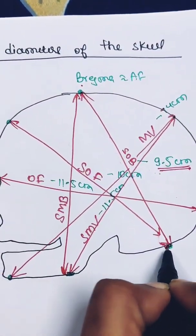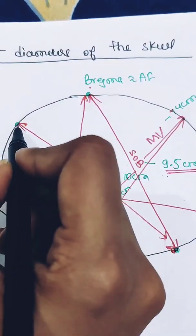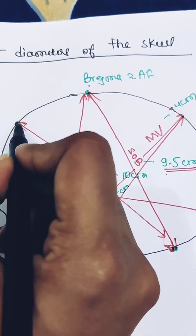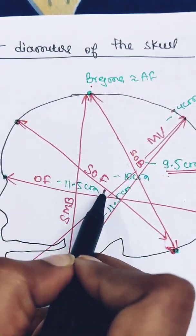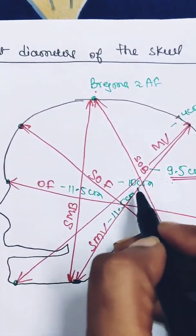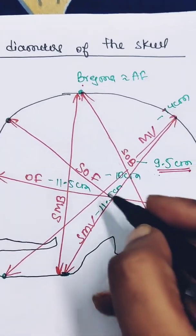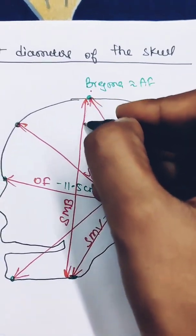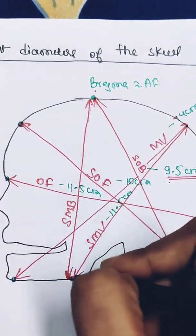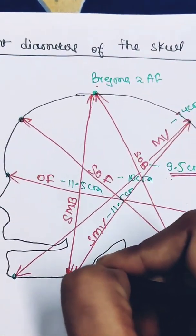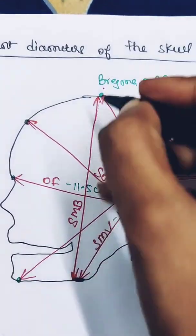Another diameter is the suboccipitofrontal diameter. It extends from the subocciput — that is the nape of the neck — till the center of the sinciput. The suboccipitofrontal diameter is approximately 10 centimeters.